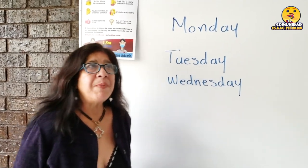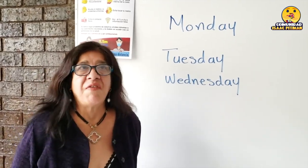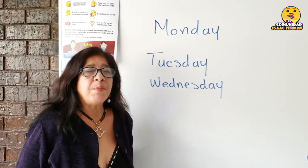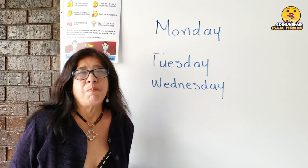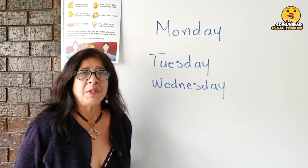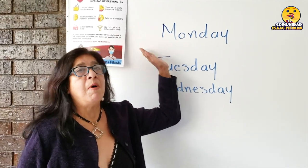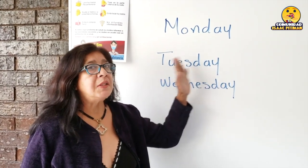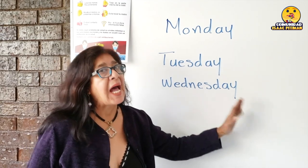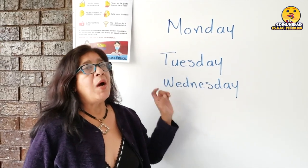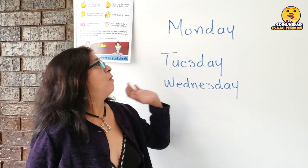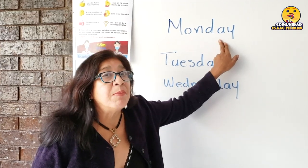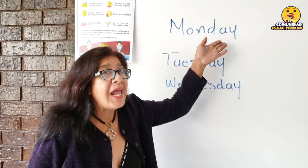Por ejemplo, siempre que decimos la fecha, que es a diario, los alumnos siguen pronunciando mal, por ejemplo, los nombres de los días. Ellos dicen 'Monday, Tuesday, Wednesday,' cuando regularmente yo les aconsejo que la letra A se pronuncia A.